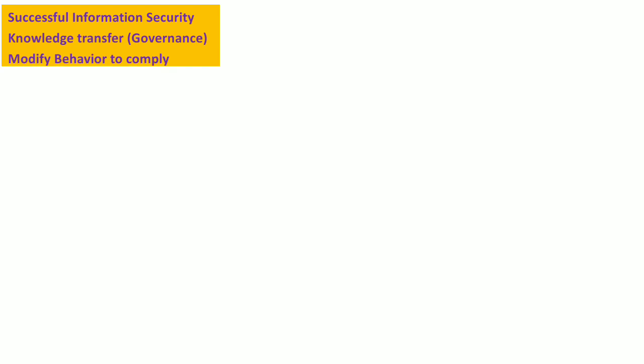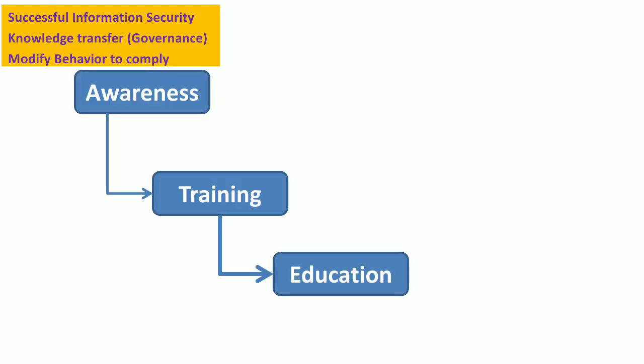This is the responsibility of the governance of that particular organization. The end objective of this knowledge transfer is to modify the behaviors of all the users in that organization. There are three levels of this knowledge transfer conducted by the governance: awareness, training, and security education.